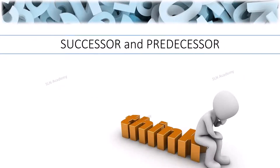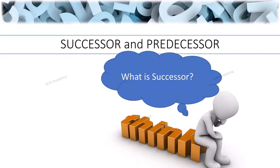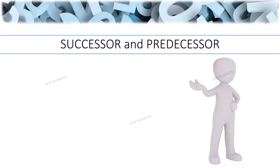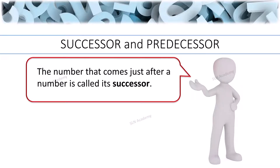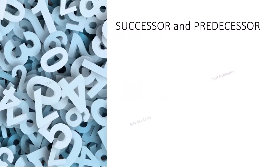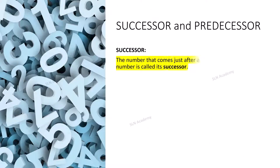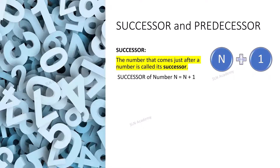Successor: What is a successor and how to find the successor of a number? The number that comes just after a number is called its successor. To find the successor of any given number, if the number is n, then the successor of n is n plus 1. You have to add 1 to the given number to find its successor.